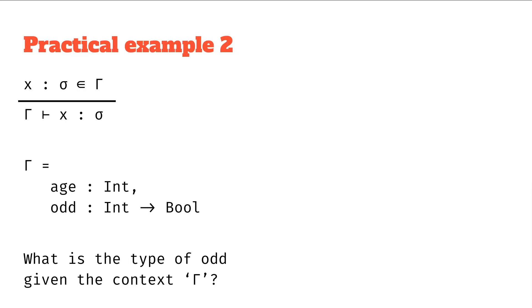And we're asked, what is the type of odd given the context gamma? And if you remember what that's asking, we're basically saying from the context gamma, it follows that odd has some type, we want to figure out what that type is.